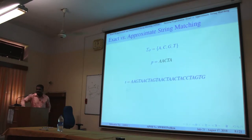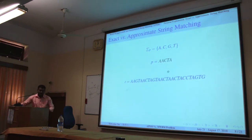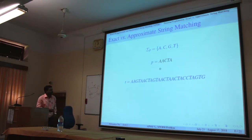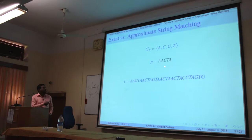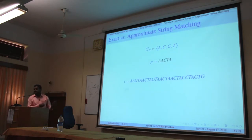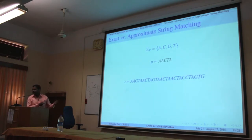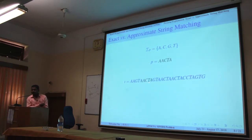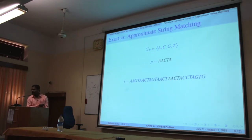Here is an example of exact string matching versus approximate string matching. In exact string matching, the target is to find the exact occurrence of the pattern P in the text T. The pattern is taken from a given alphabet, and the text is also based on that alphabet. We look for exact occurrences of the pattern in the text — there can be overlapping occurrences as well.